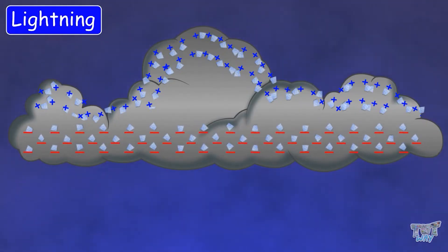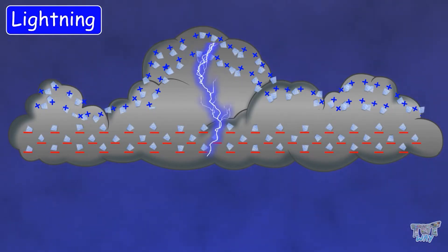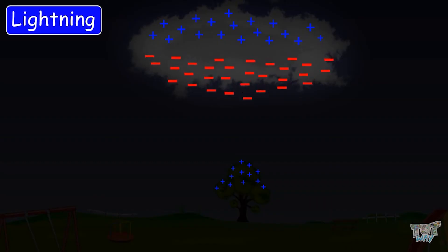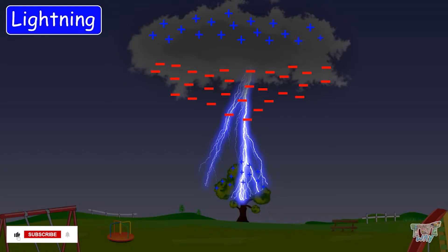This huge build-up of positive and negative charges leads to electrical discharge — atoms try to neutralize and we see a giant spark as lightning. This is the example of lightning inside the cloud. Sometimes the extreme negative charge at the bottom of the cloud may attract positive charges on the ground, resulting in lightning between the cloud and the ground.